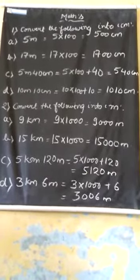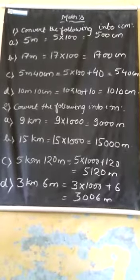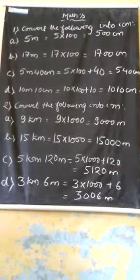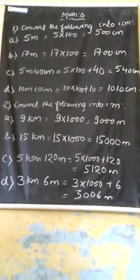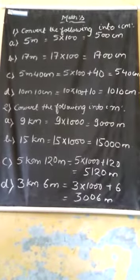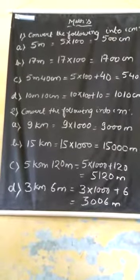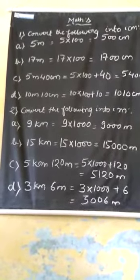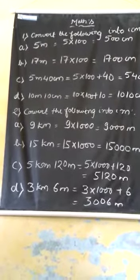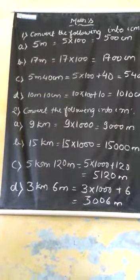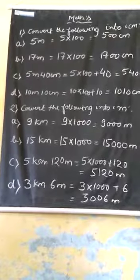Question number D: 15 kilometers multiplied by 1000, it will be 15,000 meters. And add 120, it will be 5,120 meters.